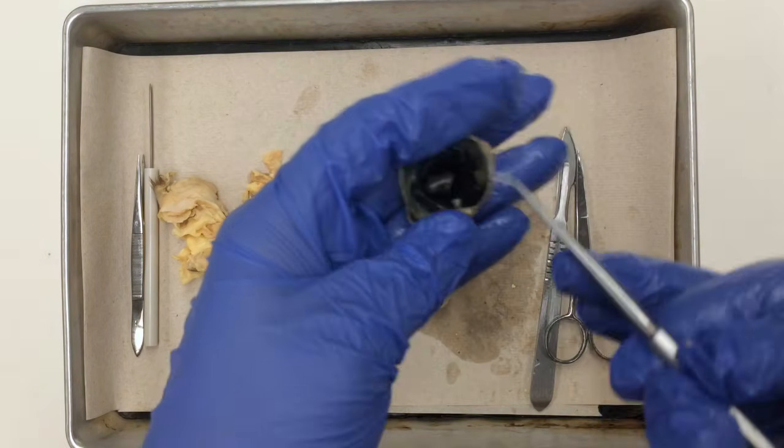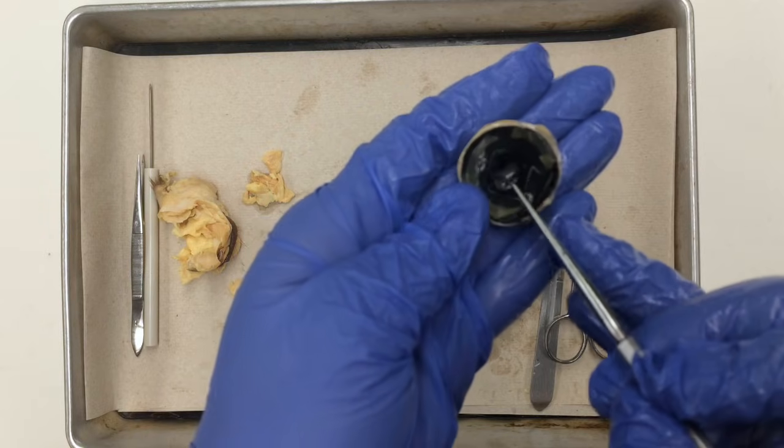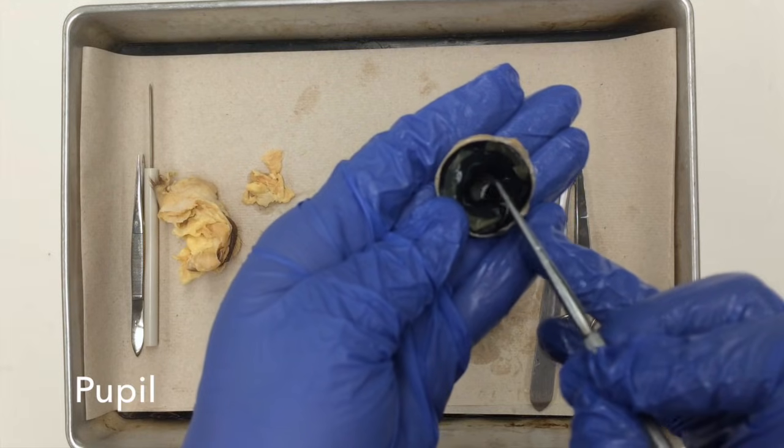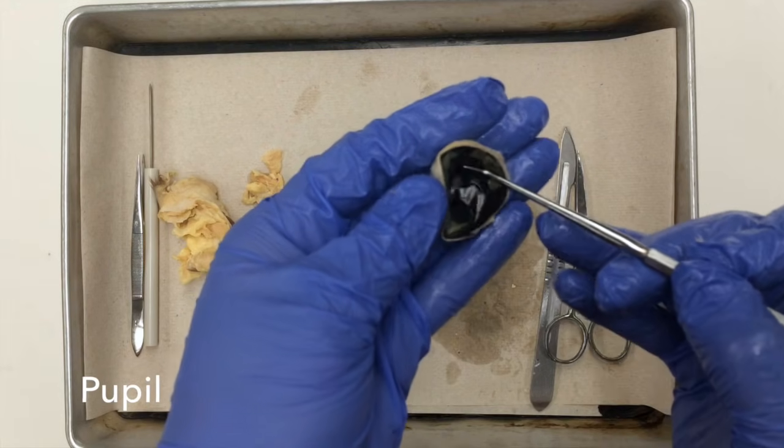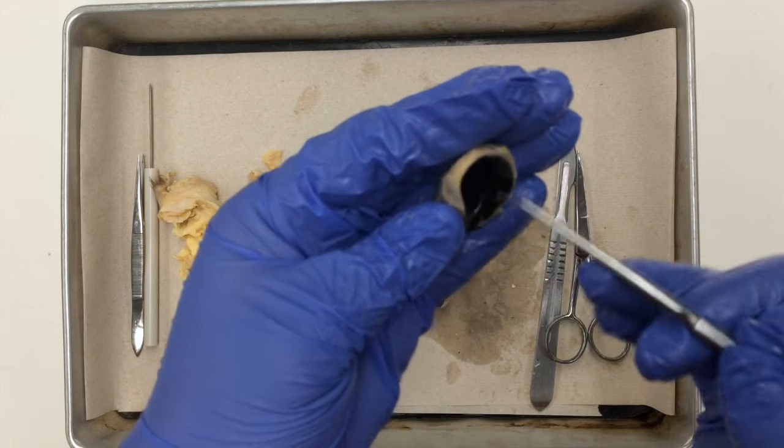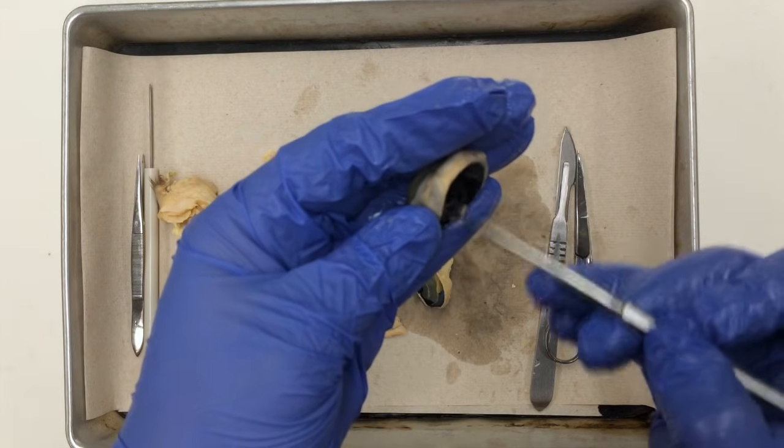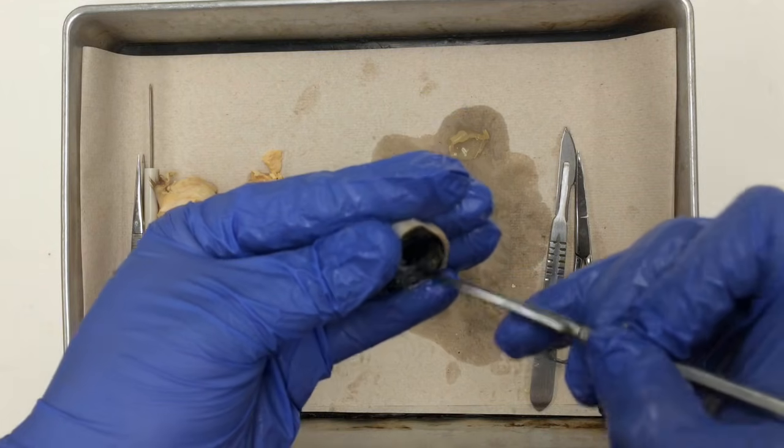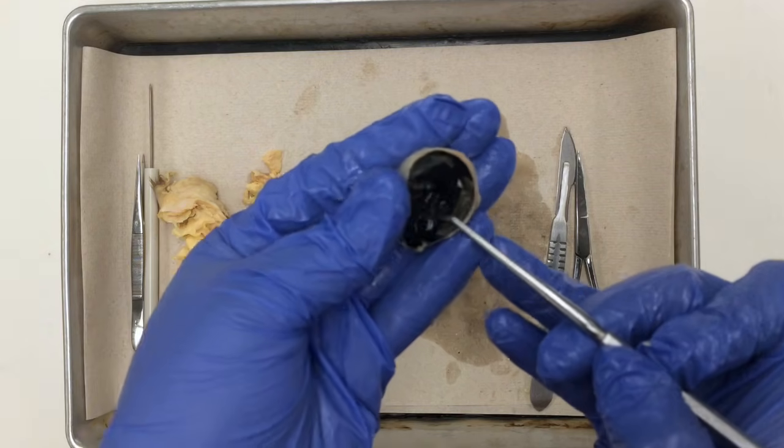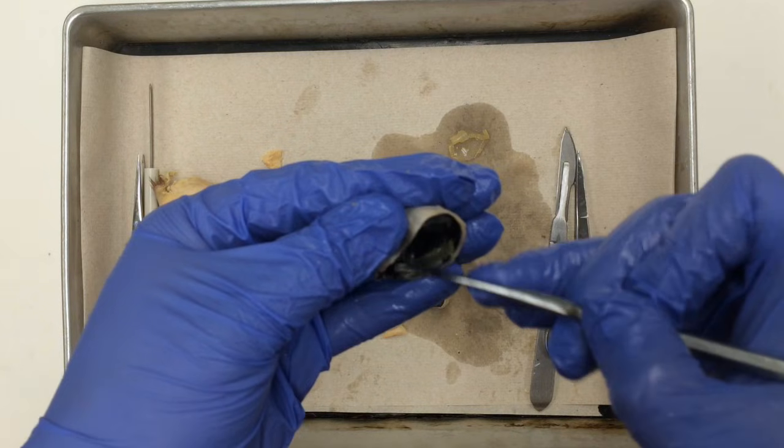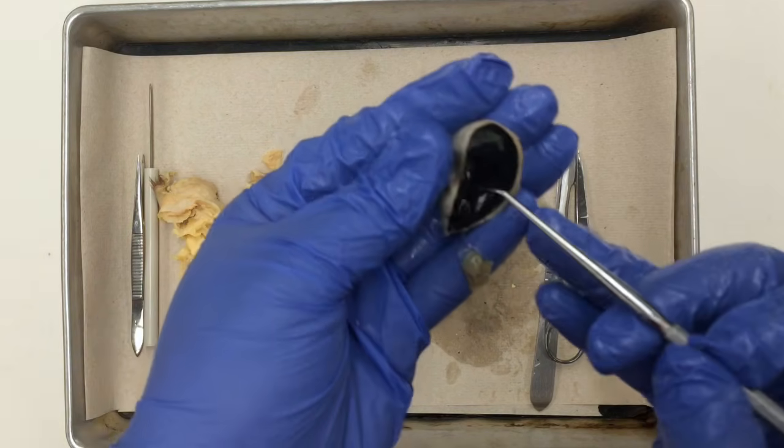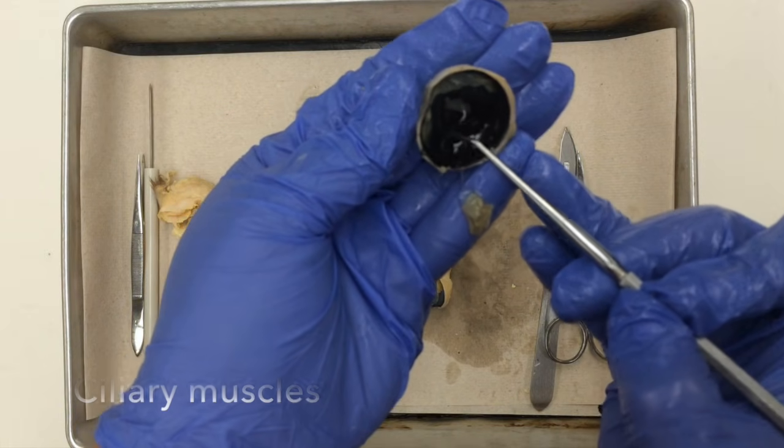If I look into the center of the eye, notice there's an opening known as the pupil. And if I scrape more of the vitreous humor off, I can actually see little structures right there that radiate behind the iris along with the eyeball, and these are all your ciliary muscles.